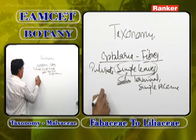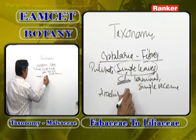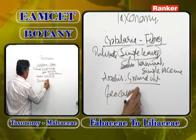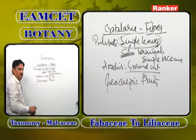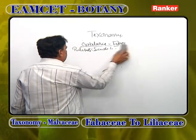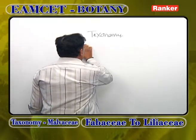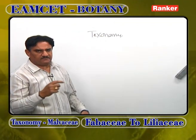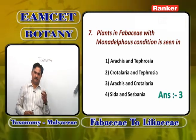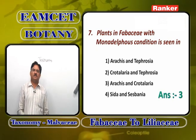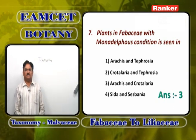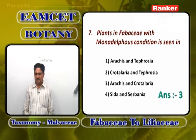Coming to Arachis — groundnut. The specialty of groundnut is geocarpic fruits — fruits are formed under the soil. Pollination occurs above the soil. After pollination, special gynophores (a stalk between androecium and gynoecium) take the flowers into the soil. Inside the soil, at the tip of the gynophores, the fertilized flower grows into a fruit.